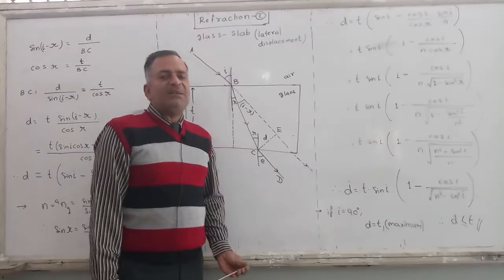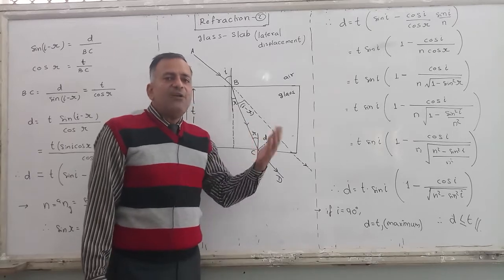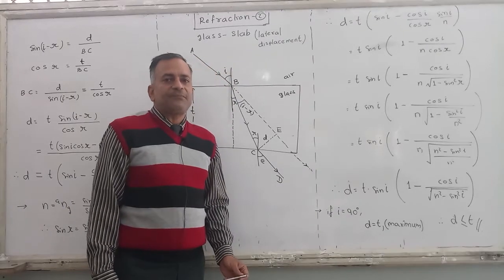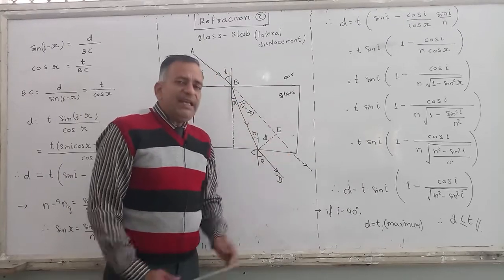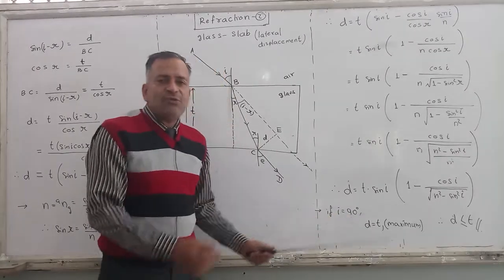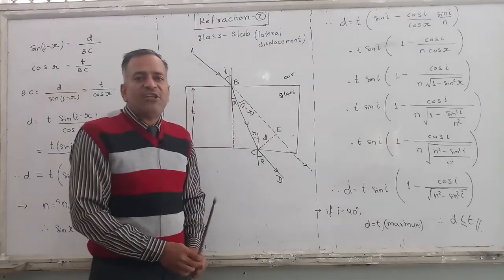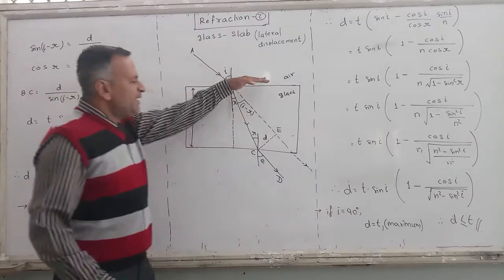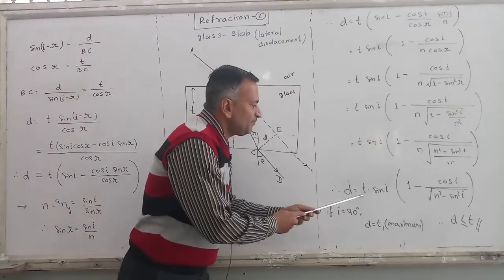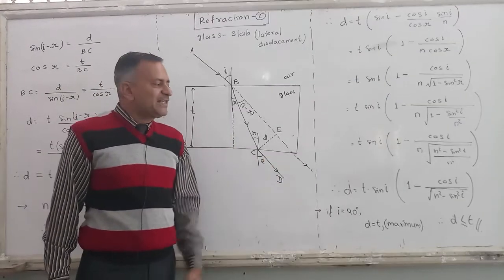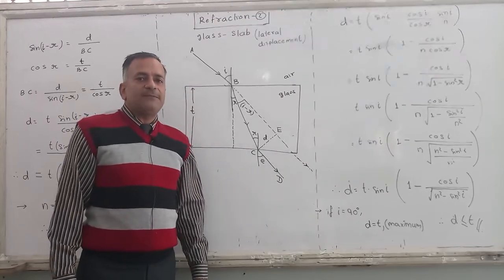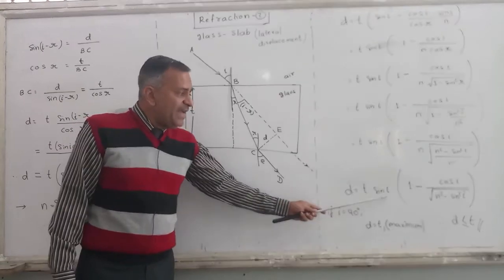Now suppose, on what two things does the lateral displacement depend? It depends basically on the refractive index, which you cannot change - refractive index of a medium you cannot change. It again depends on T, thickness of a glass slab. If you're making the glass slab yourself, you can change it. If you are not making it, if you are given the glass slab, thickness you cannot change. The value of angle I you can change.